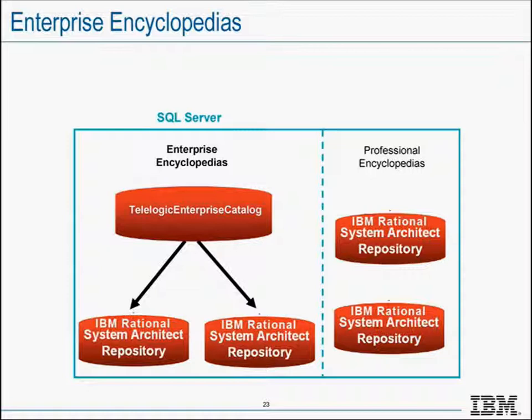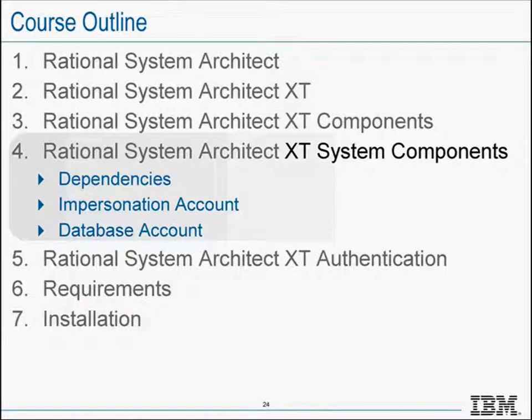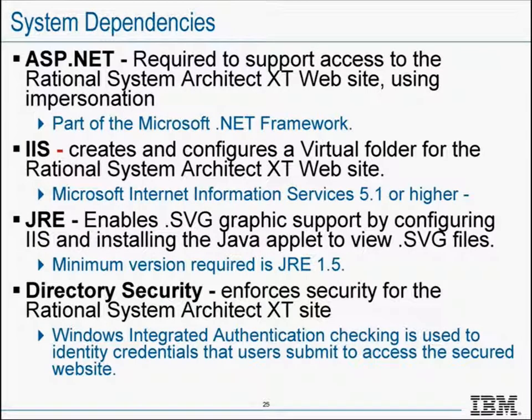The next area covers the system components, dependencies, and accounts required for System Architect. The System Architect installation enables and configures Windows services and components needed to publish websites. The system components required for an XT deployment include ASP.NET — since System Architect is based on Microsoft's ASP.NET technology as part of the .NET framework, it requires these components installed on the server designated for System Architect XP to support website access using impersonation and ASP components.